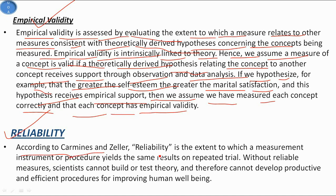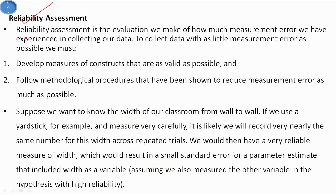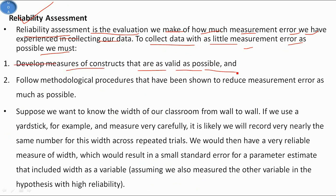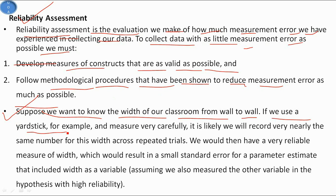According to Carmines and Zeller, reliability is the extent to which a measurement instrument or procedure yields the same result on repeated trials. Without reliable measures, scientists cannot build or test theory and therefore cannot develop productive procedures for improving human well-being. Reliable assessment refers to how much measurement error we have experienced in collecting our data. For example, if we measure the width of a classroom using a yardstick very carefully, we will likely record very nearly the same number across repeated trials — giving us a very reliable measure.